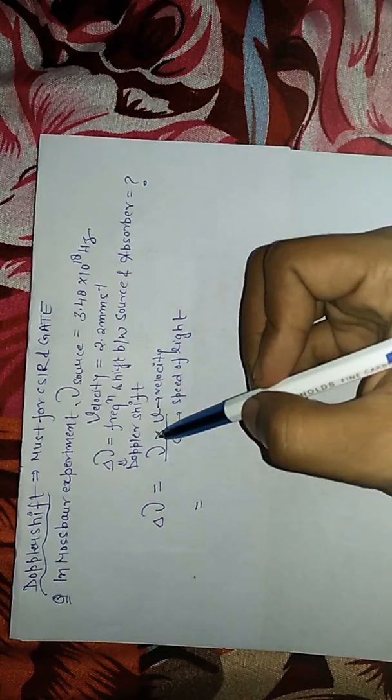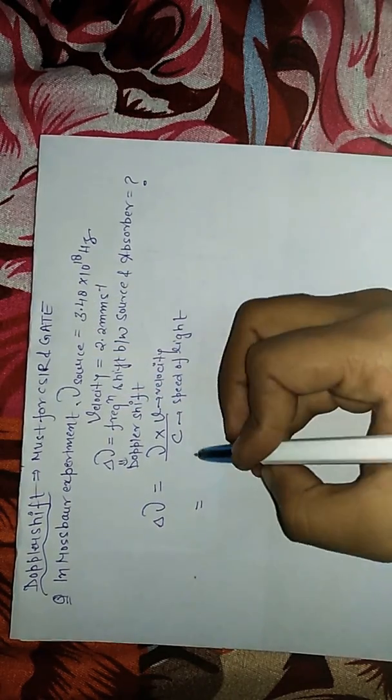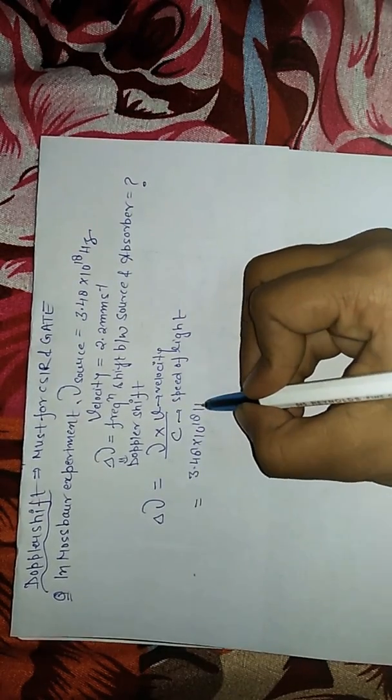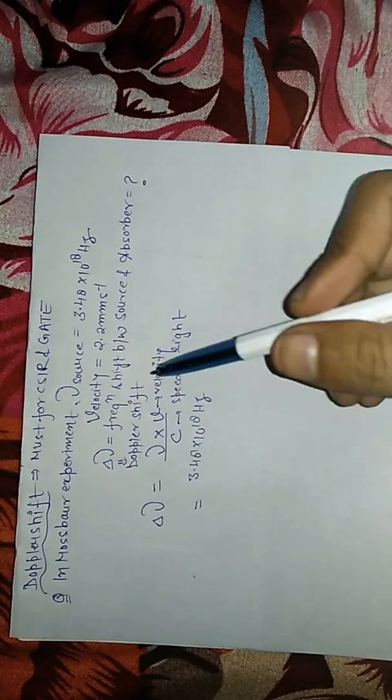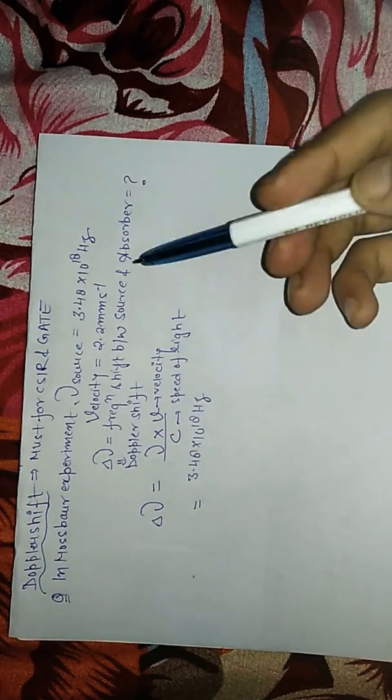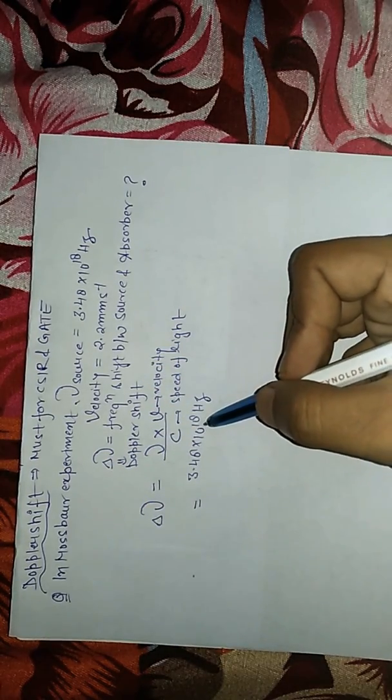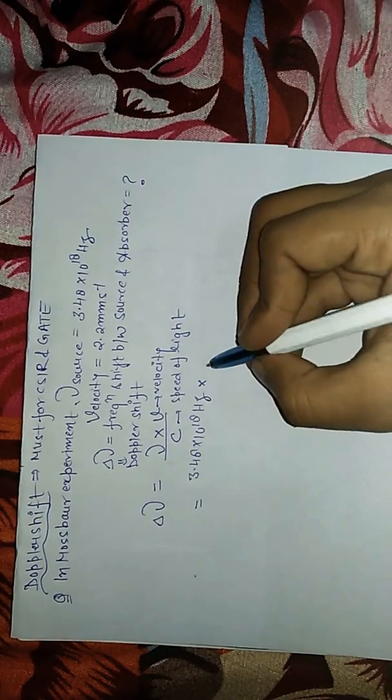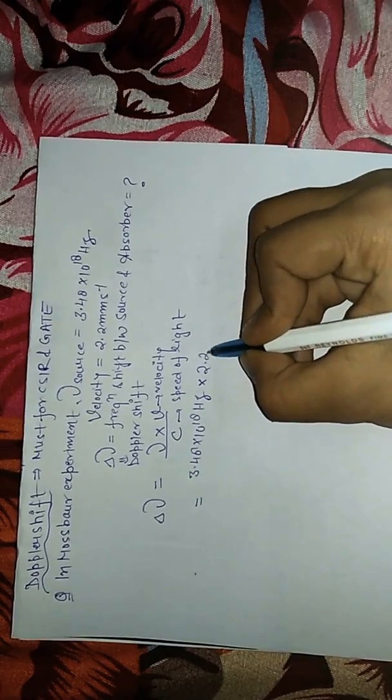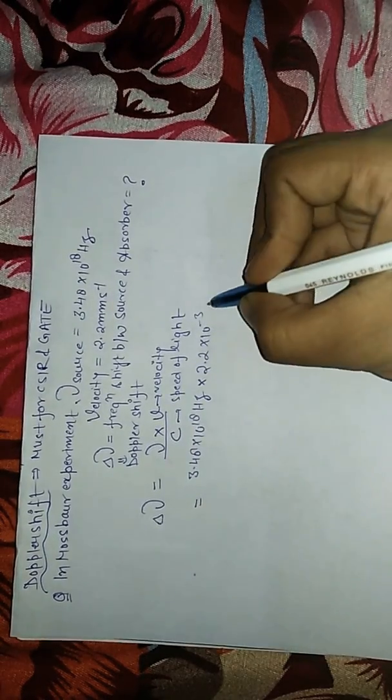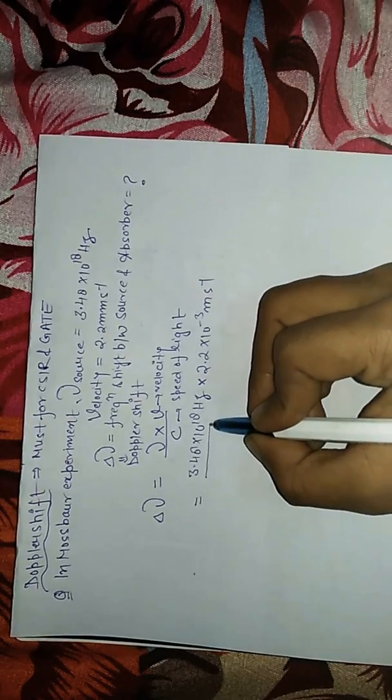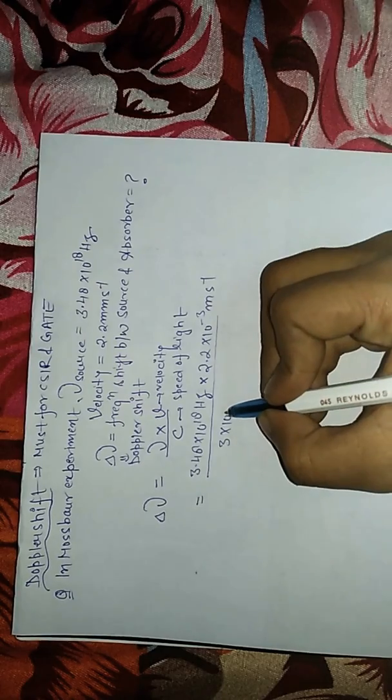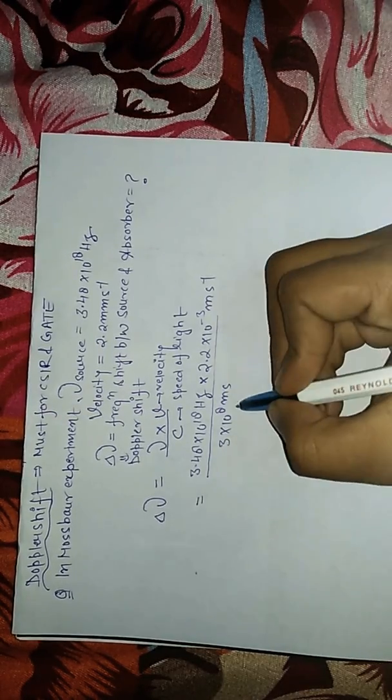You can see the source is given as 3.48 × 10^18 hertz. This is a CSIR question. So 3.48 × 10^18 hertz into velocity is given 2.2 millimeter per second, so this is 2.2 × 10^-3 meter per second divided by 3 × 10^8 meters per second.